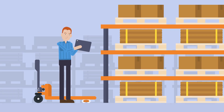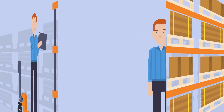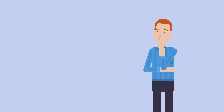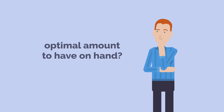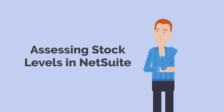A major aspect of managing inventory is having full visibility into your current stock levels and accurate data to adjust those levels as necessary. How do you know whether you have too little or too much on hand for any given item? When should you reorder items? What is the optimum amount that you should always keep on hand? Let's take a look at assessing stock levels in NetSuite.